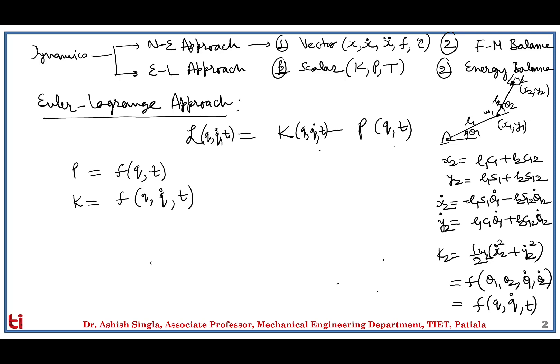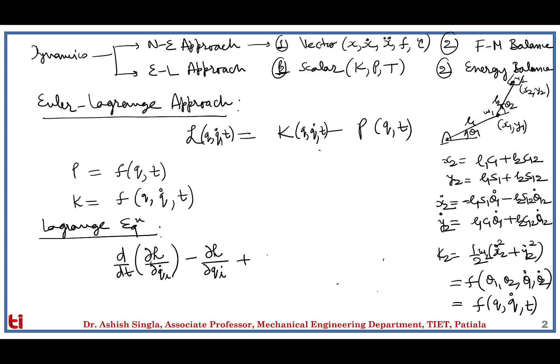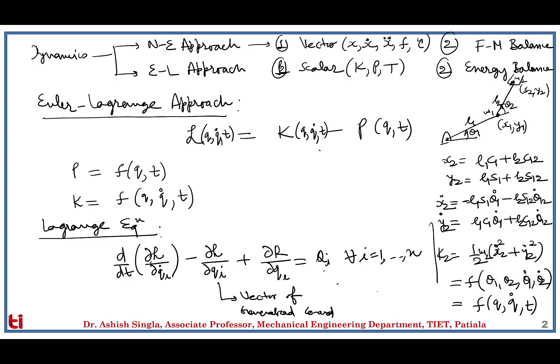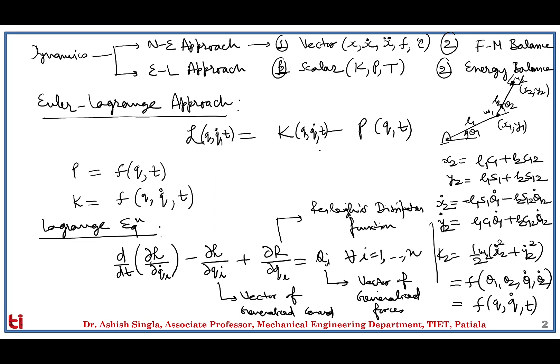The Lagrange equation is: d/dt(∂L/∂q_i_dot) − ∂L/∂q_i + ∂R/∂q_i_dot = Q_i, for i = 1 to n, where n is the degrees of freedom. Here, q_i is the vector of generalized coordinates, Q_i is the vector of generalized forces, and R is the Rayleigh dissipation function — representing all energy dissipated by the system due to friction, air drag, or any other damping mechanism.